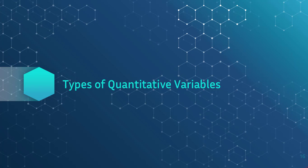Types of Quantitative Variables. We have mentioned before that in quantitative research, it is required for variables to be measurable or quantifiable. We are going to discuss quantitative variables as categorical, ordinal, or interval.